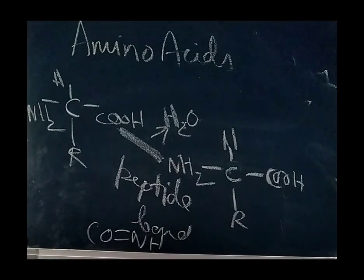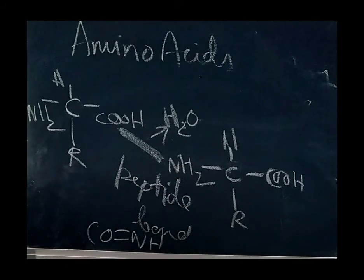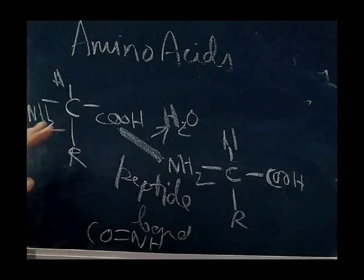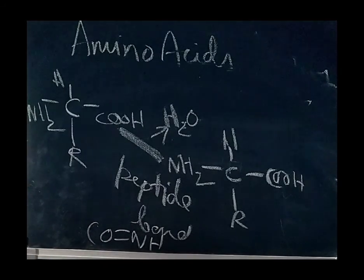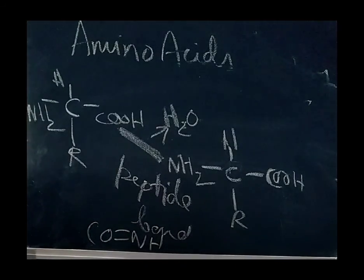There are 20 types of amino acids which are found in human beings. Names are like alanine, serine, glycine. All the 20 types of amino acids are because of this R is variable. It may be H, it may be CH3, it may be CH2, like that.